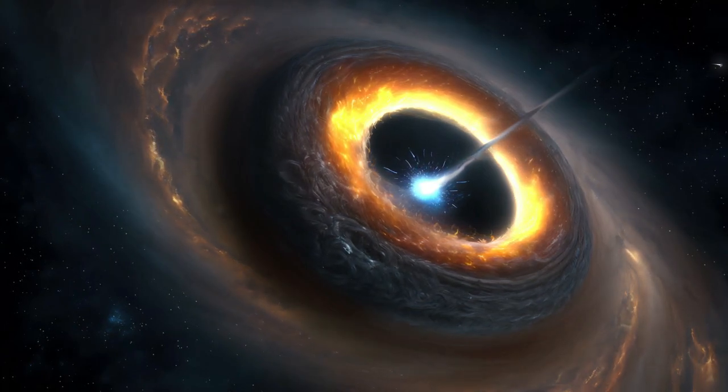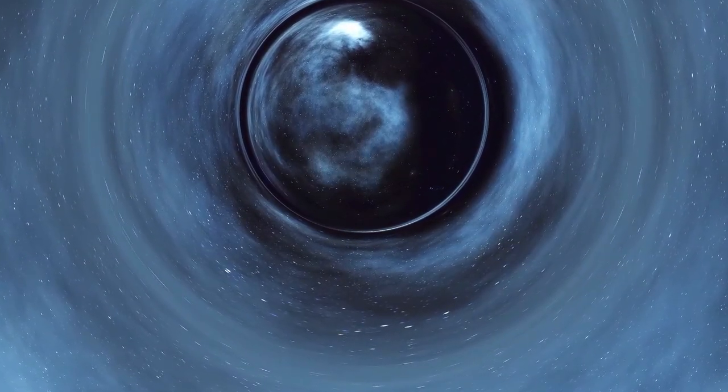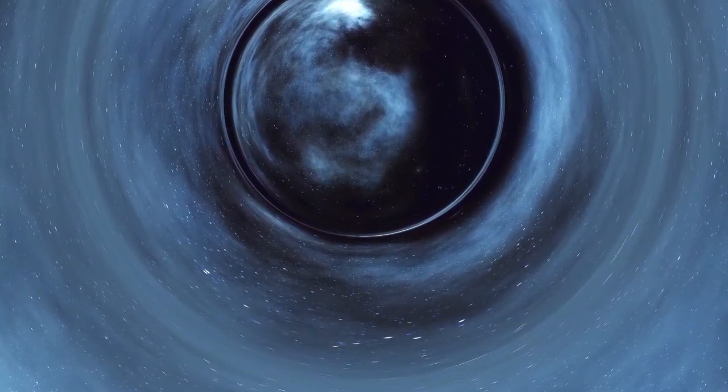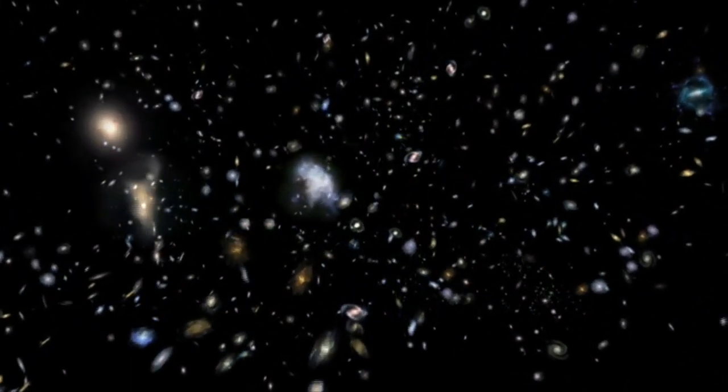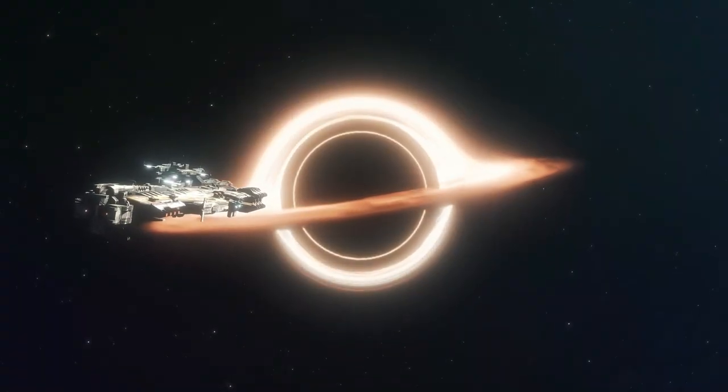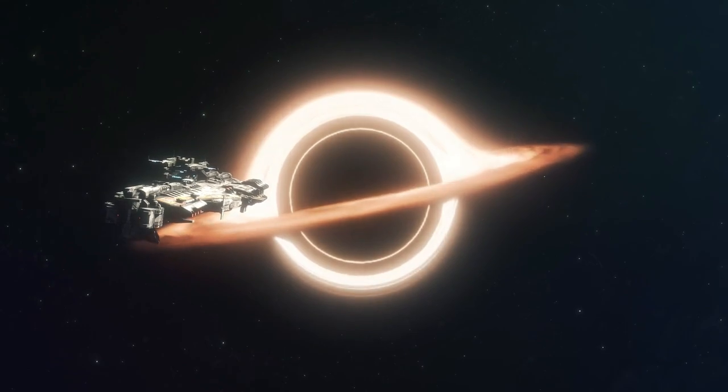The singularity is hidden by an event horizon, which marks the point of no return for any object falling into a black hole. However, some theoretical models suggest that there could be other types of singularities, such as naked singularities, which are not surrounded by an event horizon and could be visible to an outside observer.